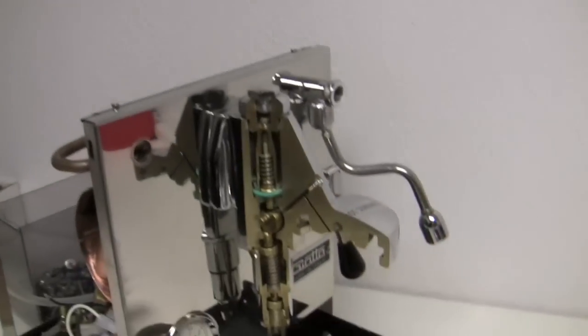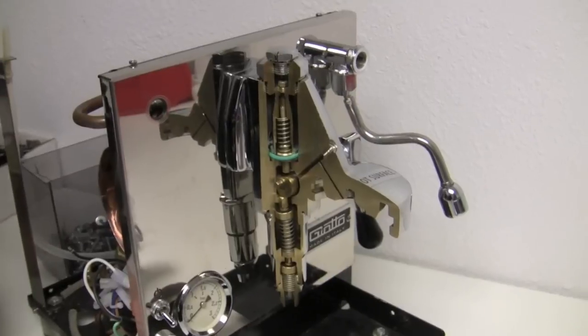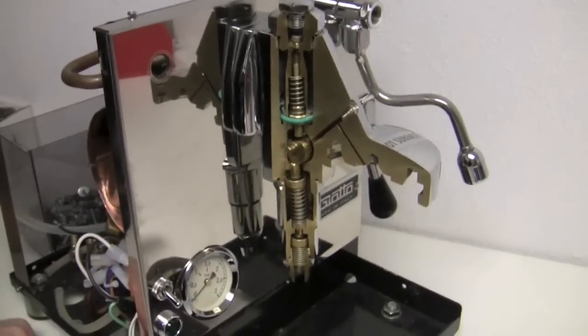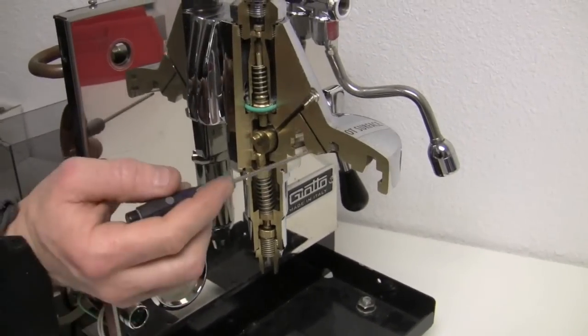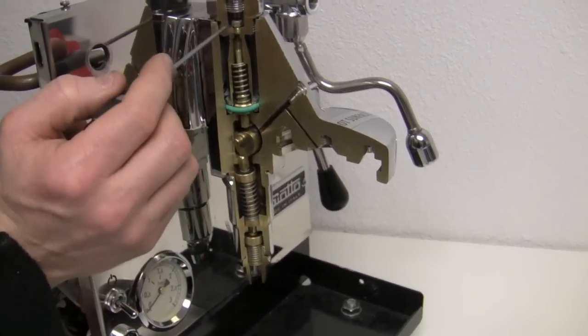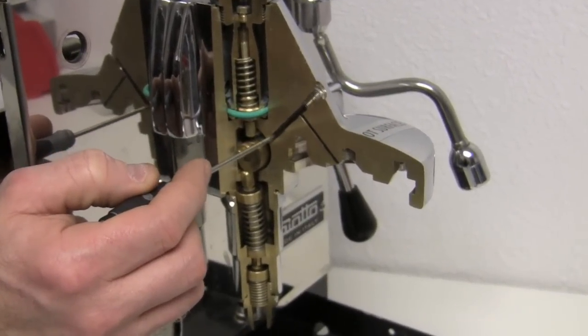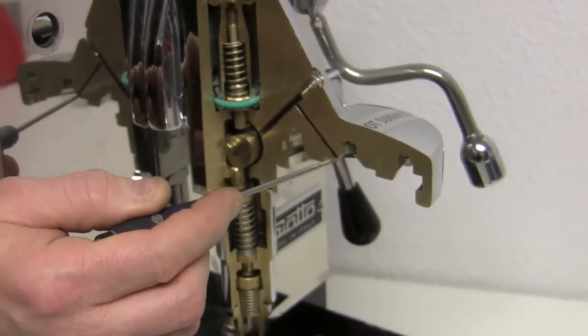Maybe it would be helpful for people to see the path of backflushing. And where it's going and what it's doing. Right. What it's addressing. Yeah. So when you backflush, the path for the water is water comes in through here, comes down through this seal, goes up here and down through here to the coffee, or the portafilter that has the coffee in it.